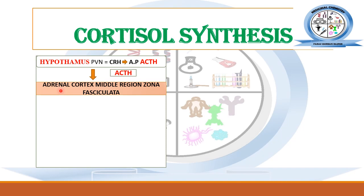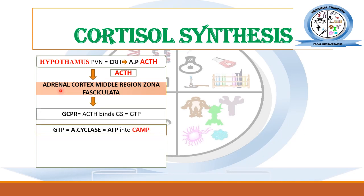This adrenocorticotropic hormone (ACTH) then goes towards the adrenal cortex — specifically the middle region called the zona fasciculata — where it is responsible for the activation of G-coupled protein receptors present in the membrane. ACTH binds with the G-stimulatory protein there.